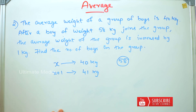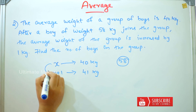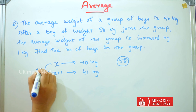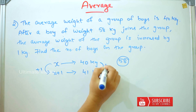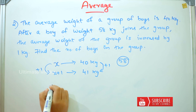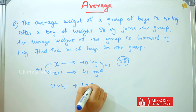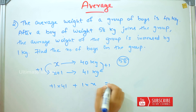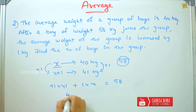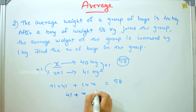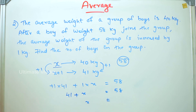We calculate: 41 plus 1 into x equals 58 kg. So 41 plus x equals 58. Therefore x equals 58 minus 41, which is 17. The number of boys in the group is 17.